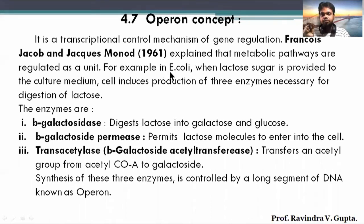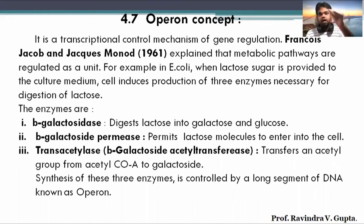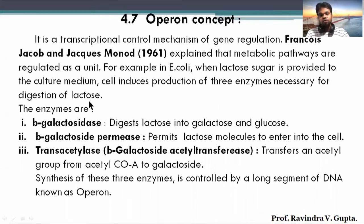For example, in E. coli, when lactose sugar is provided to a culture medium — meaning if E. coli is grown in a tube or flask and lactose is added as a sugar to the medium — then the cell induces the production of three enzymes necessary for digestion of lactose. So for lactose digestion, the E. coli cell will produce three types of enzymes in that medium.